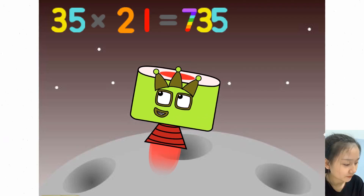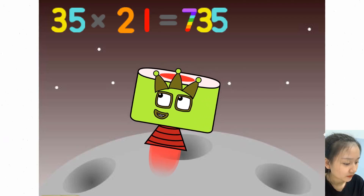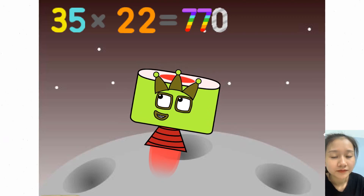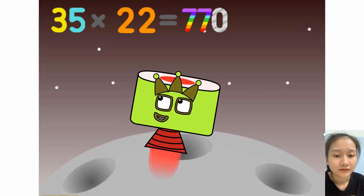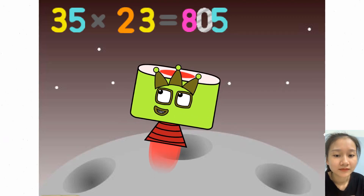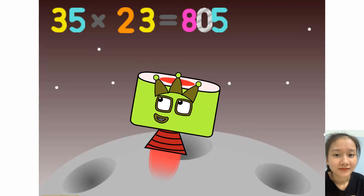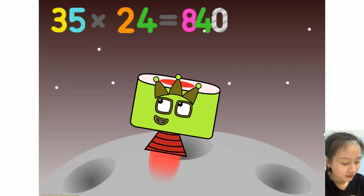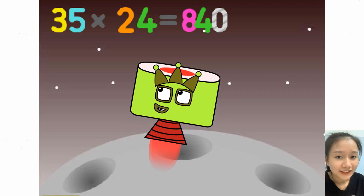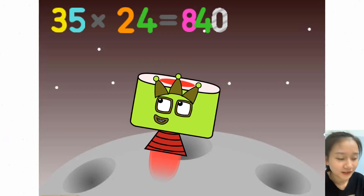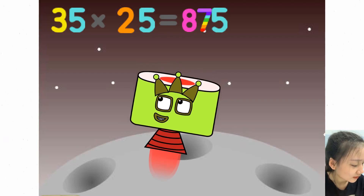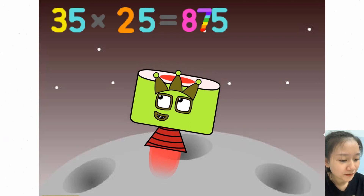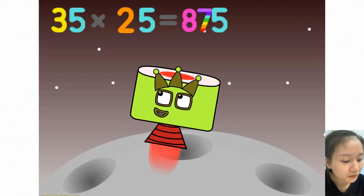35 times 21 equals 735. 35 times 22 equals 770. 35 times 23 equals 805. 35 times 24 equals 840. 35 times 25 equals 875.